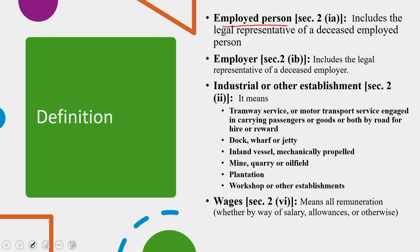The entire act revolves around the wage, so understanding the wage is vital. Wages could be any remuneration payable under any award or settlement between the parties, or by order of a court. Any remuneration to which the person employed is entitled in respect of overtime work, holidays or any leave period. It could be any additional remuneration payable under the terms of employment, any sum payable on termination of employment under any law or contract, or any sum to which the person is entitled under any scheme framed under any law in force.